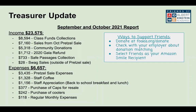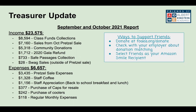Ahora tenemos nuestra actualización de la tesorería. Nuestra tesorera va a darnos su reporte. Adelante, Sara. Tenemos el reporte de este año, de los últimos dos meses. Para septiembre y octubre tuvimos un ingreso de $23,575 dólares. Nuestros gastos fueron de $6,657. El ingreso puede ser un poco engañoso, ya que en noviembre y diciembre se distribuyen a los padres.